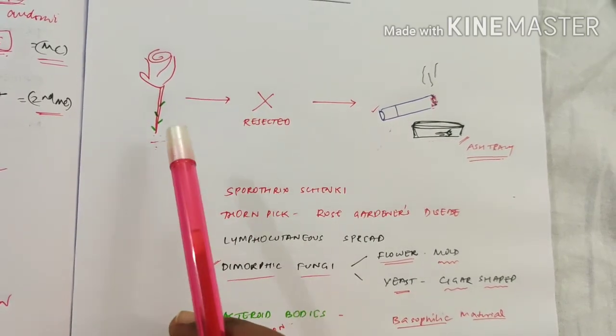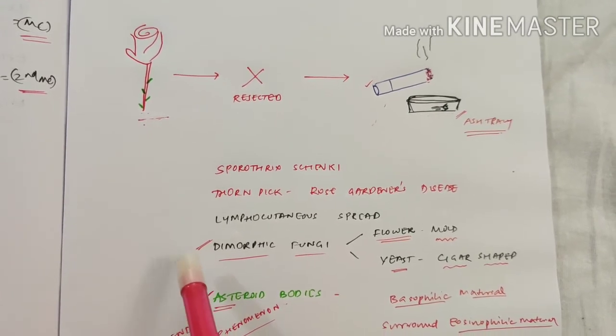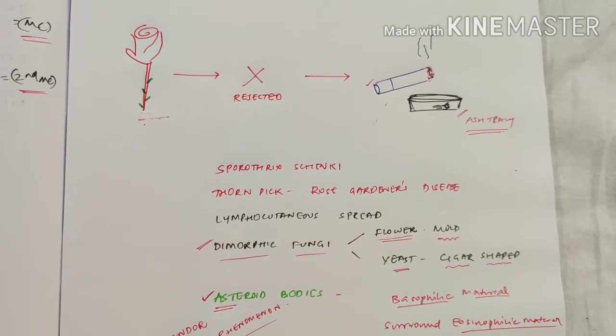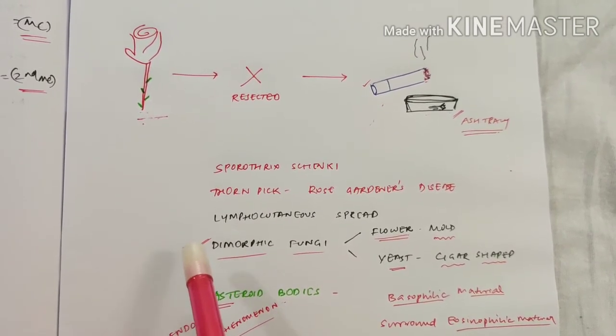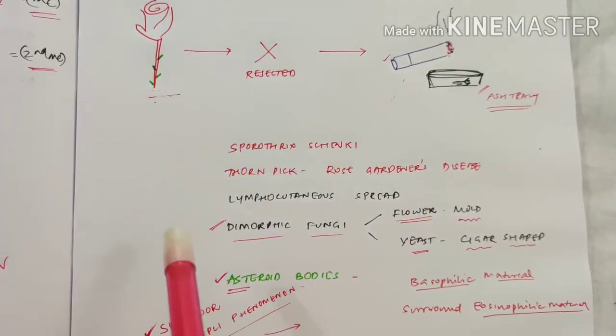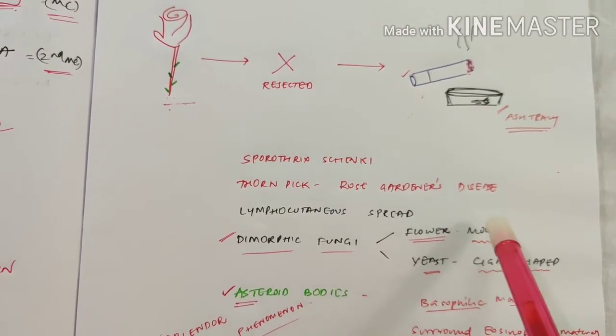Because of rejection given by the pretty girl, remember all deep mycoses are dimorphic fungi, and along with them, one subcutaneous mycosis which is sporotrichosis is a dimorphic fungus. So it can be in two forms: mold and yeast.